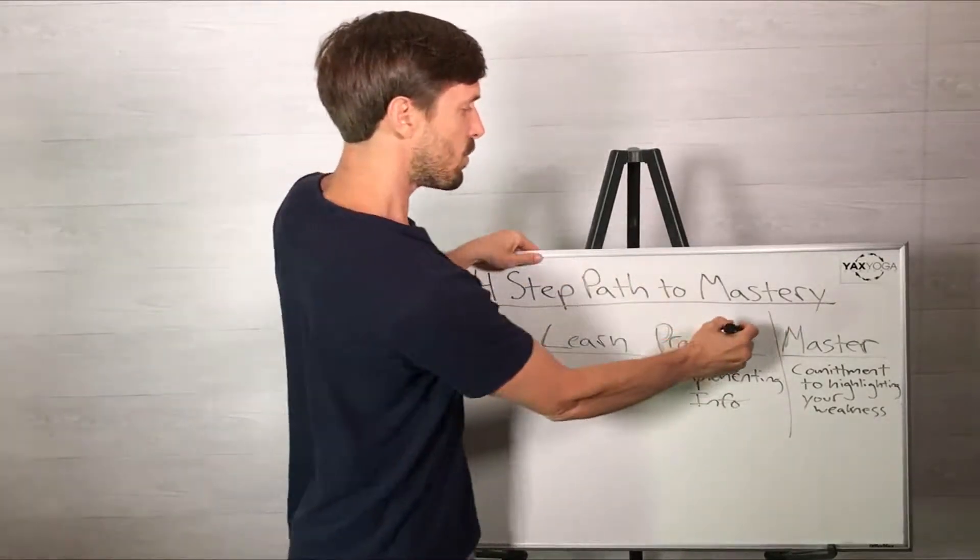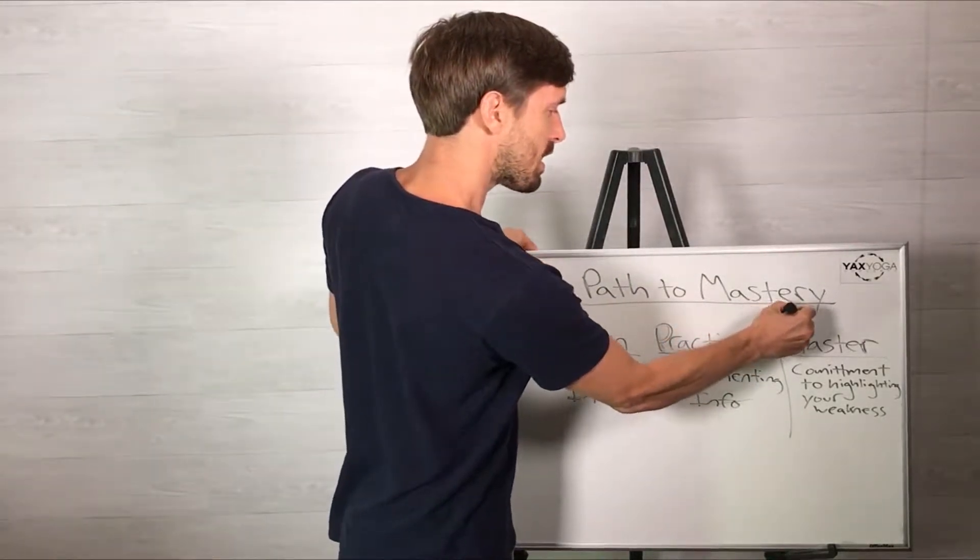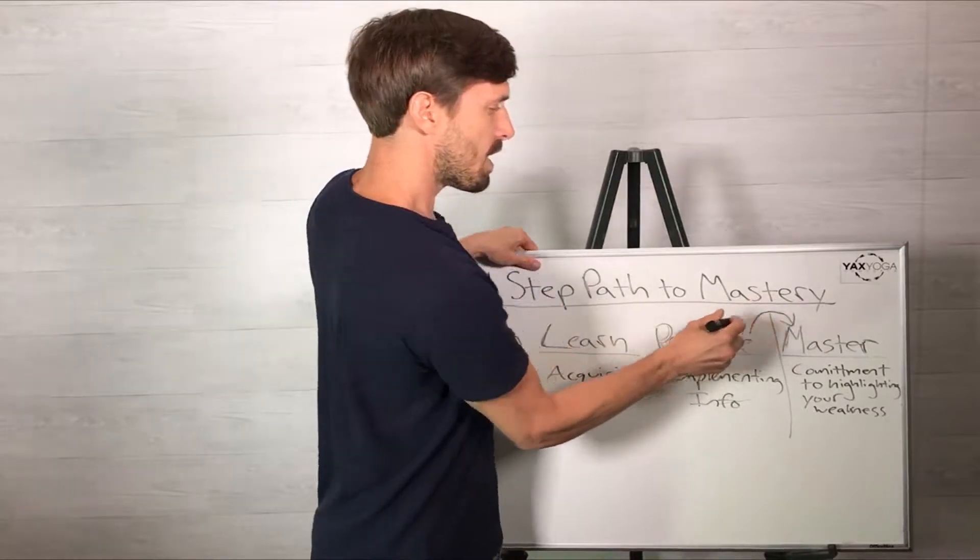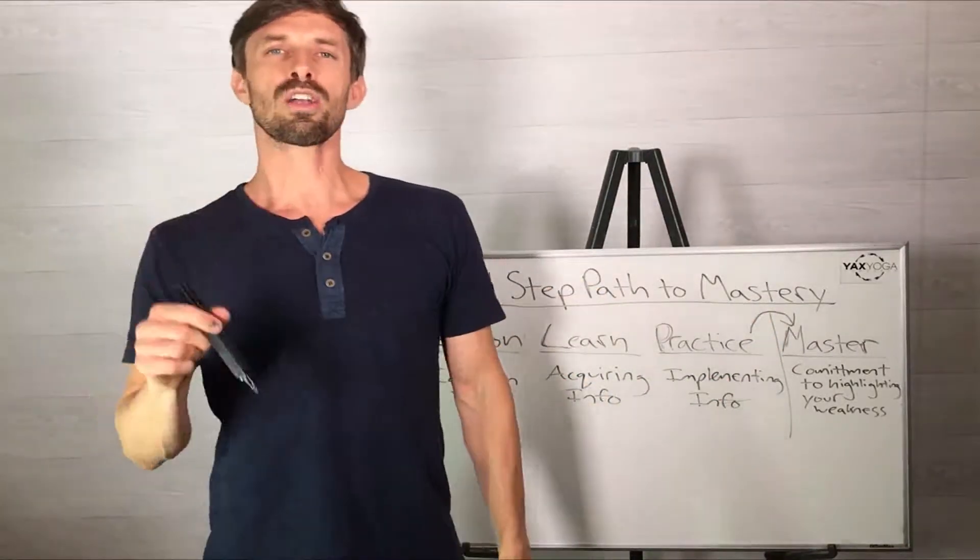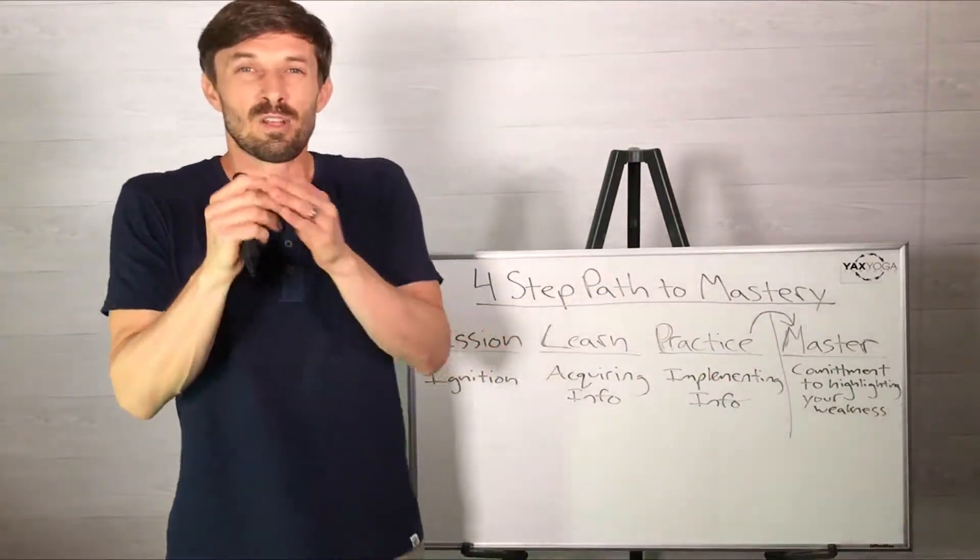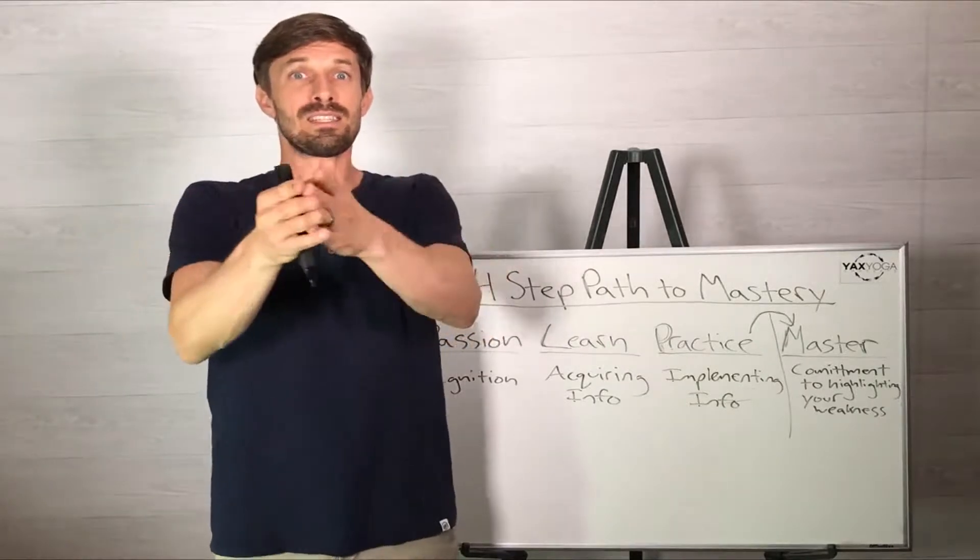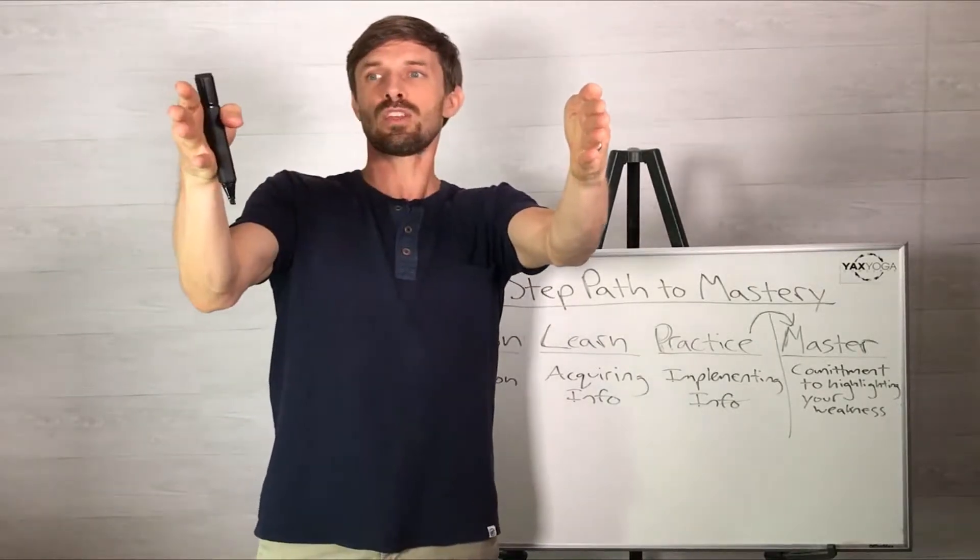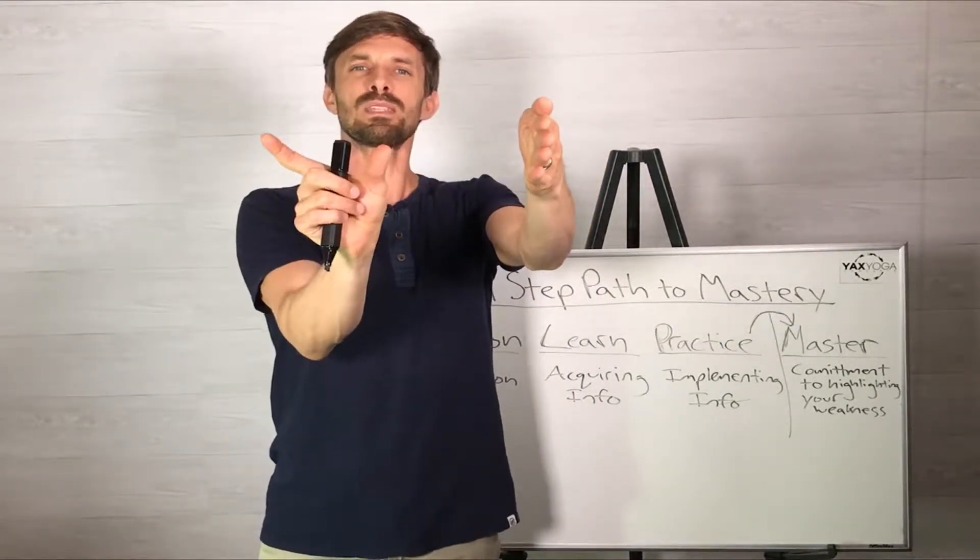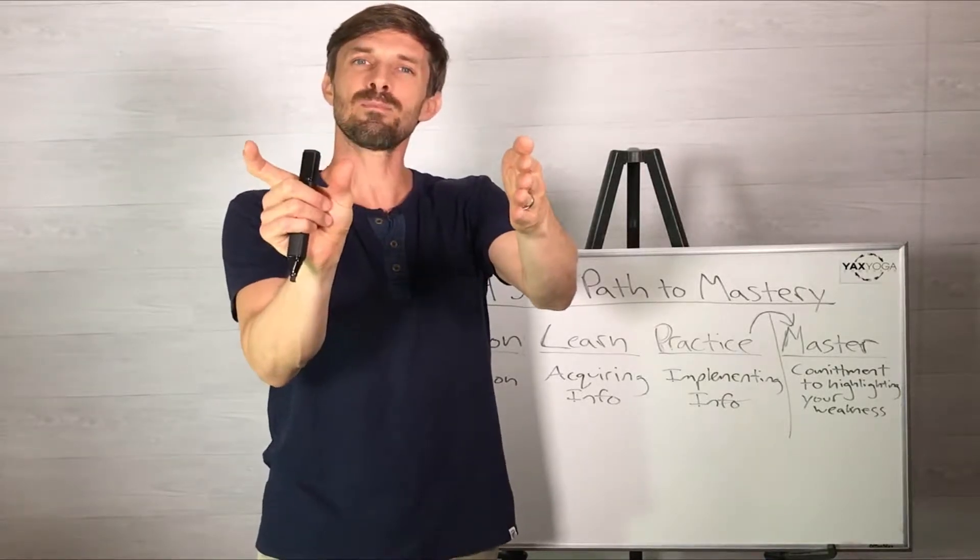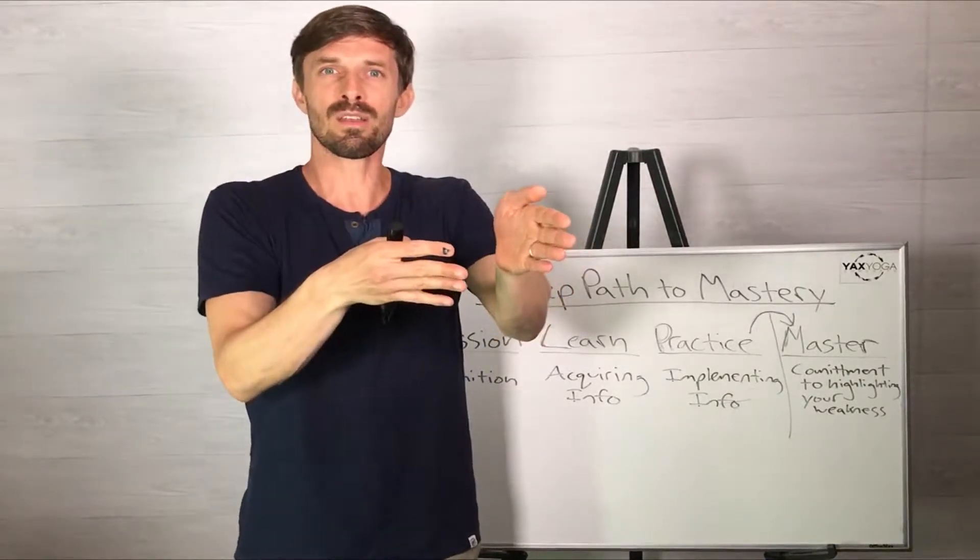So this hurdle, right? How do you get from practicing into that mastery? It's what Daniel Coyle called targeting your struggle. Like reach for something, right? See where you got, see where you wanted to go, and then evaluate that. What was missing? Because without that information, you don't know what to focus on.